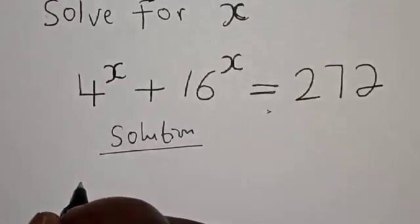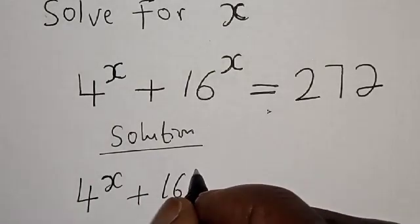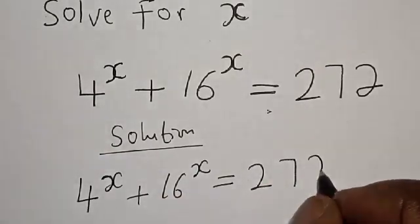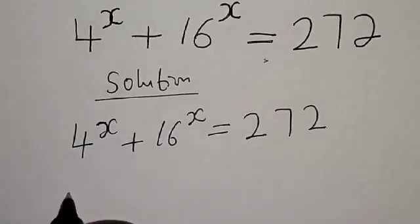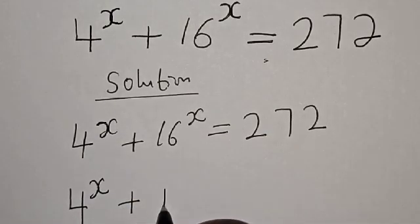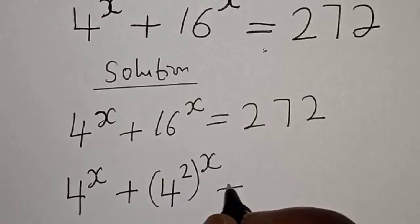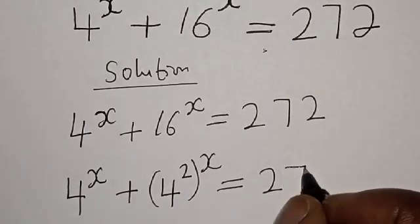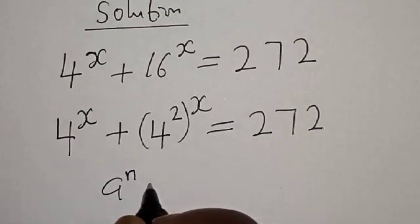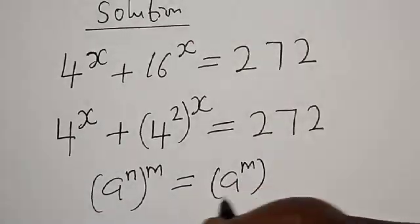We have the given equation: 4 raised to power s plus 16 raised to power s is equal to 272. This can be expressed as 4 raised to power s plus 16 — which is 4 squared — raised to power s, is equal to 272. Remember that if you have a raised to power n raised to power m, it is the same thing as a raised to power m raised to power n.